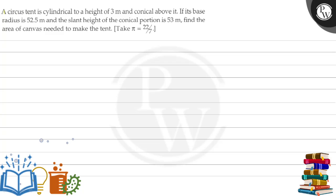Hello, let's see the question. A circus tent is cylindrical to a height of 3 meters and conical above it. If its base radius is 52.5 meters and the slant height of the conical portion is 53 meters, find the area of canvas needed to make the tent.